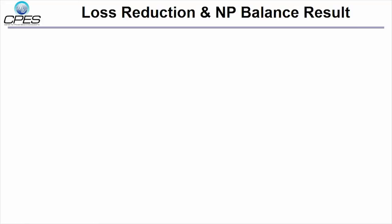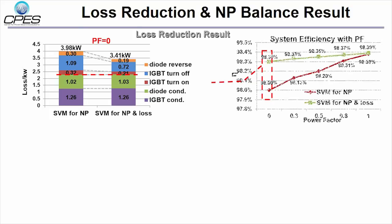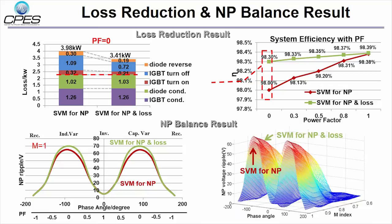So with this improved SVM scheme, the total system loss can be reduced, especially at low power factor case as shown in this loss breakdown chart. The system efficiency can be improved at low power factor case, and the neutral point voltage balance result is also compared.